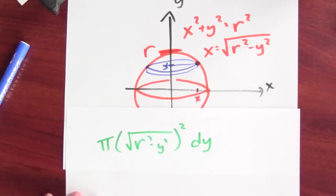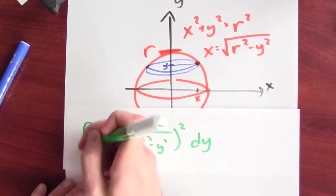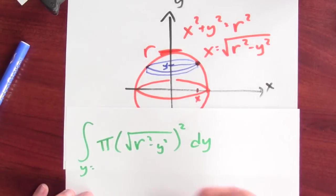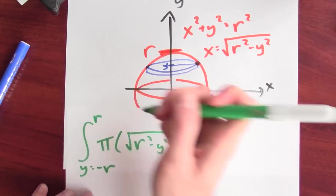When I set up my integral, I want to integrate this. Y goes from minus r to r.